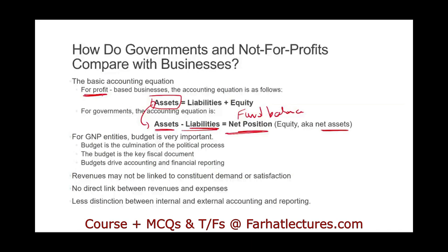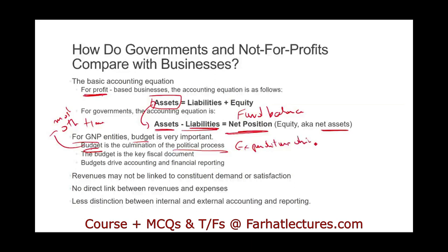For government and not-for-profit entities, the budget is extremely important — it's the main document. The budget is the culmination of a political process. For many small localities and cities, they spend most of their time on the budget to determine how to spend the money, because that's what matters. It's the expenditure that drives everything in the government situation.